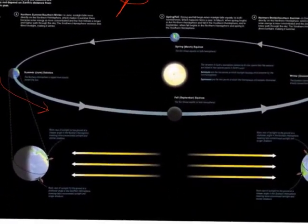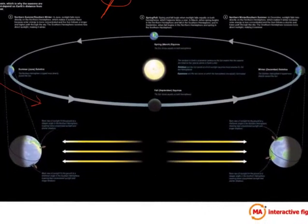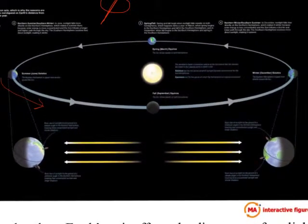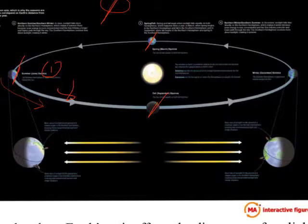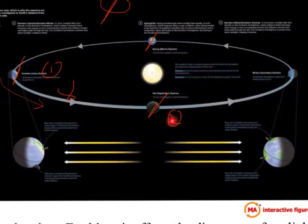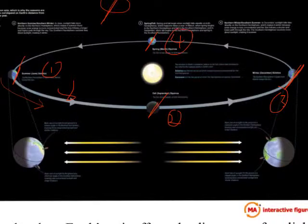We're showing the Earth three months apart as it orbits the sun, with its tilted axis of rotation. This position would be summer in the northern hemisphere, this would be fall in the northern hemisphere, this would be winter in the northern hemisphere, and this would be spring in the northern hemisphere.